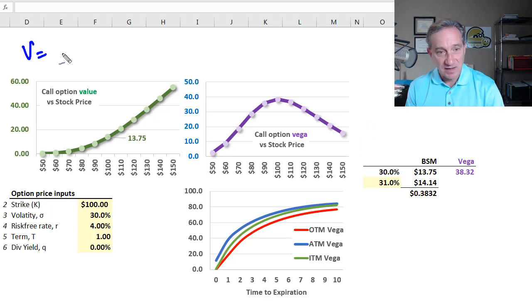Mathematically, Vega is the change in the call price with respect to a change in the volatility. It's like Delta in the sense that Delta was a change in the call price with respect to a change in the stock price. Here with Vega, it's the change in the call price with respect to a change in the volatility.